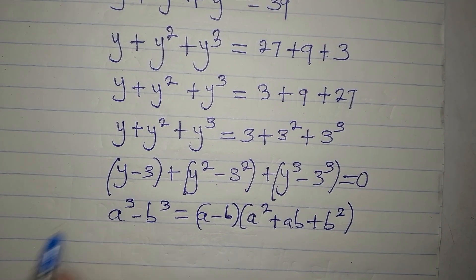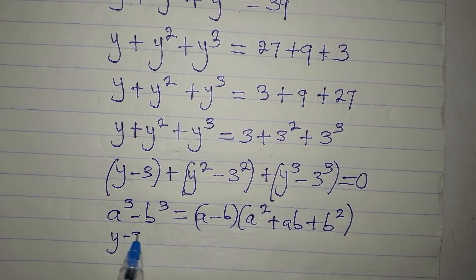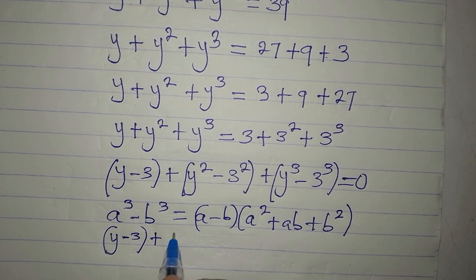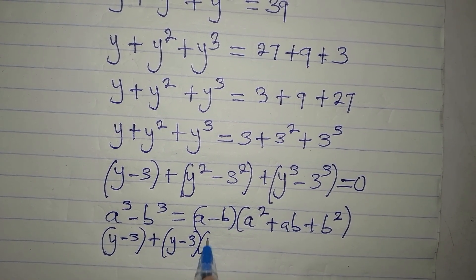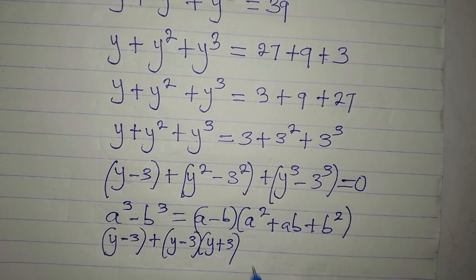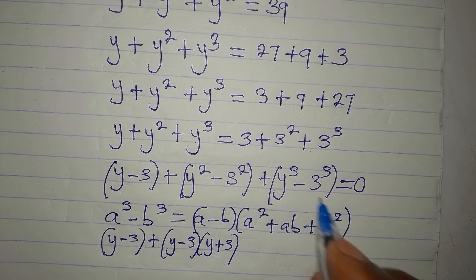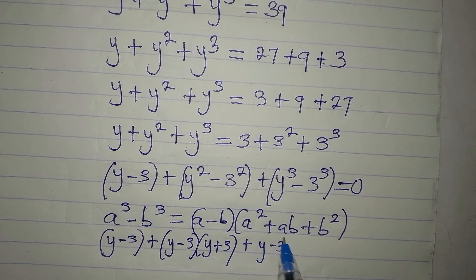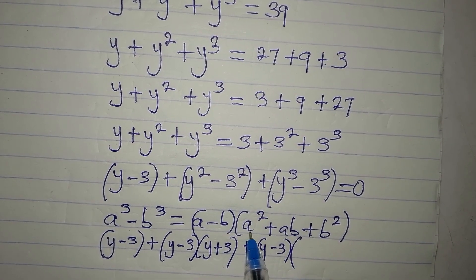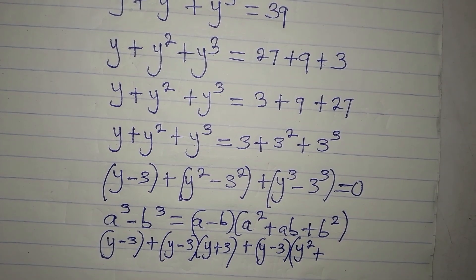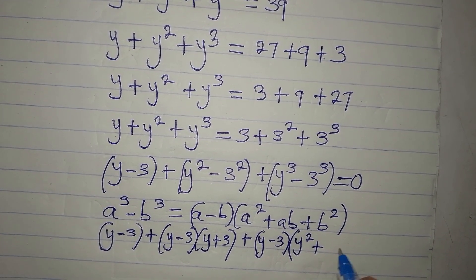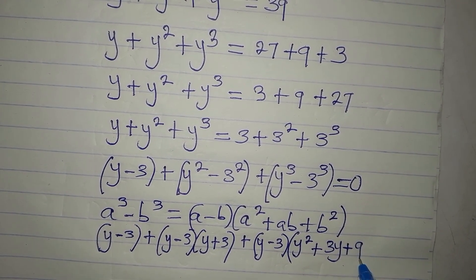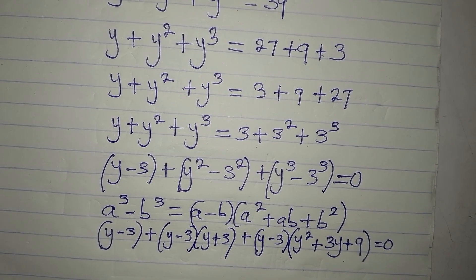So I'm going to factor each term. First we have y minus 3. Then the difference of two squares: y squared minus 3 squared gives (y minus 3)(y plus 3). Then for the difference of two cubes: y cubed minus 3 cubed gives (y minus 3)(y squared plus 3y plus 9). This all equals zero.